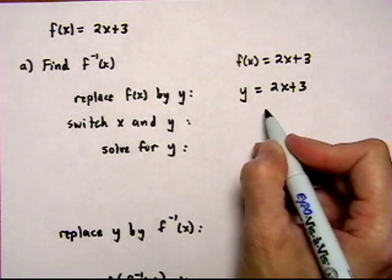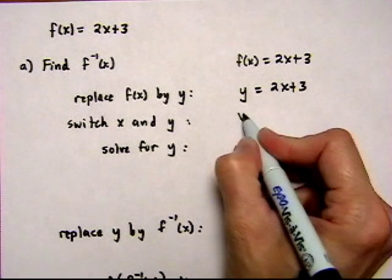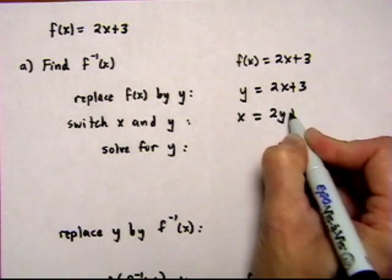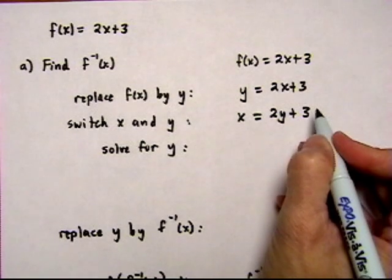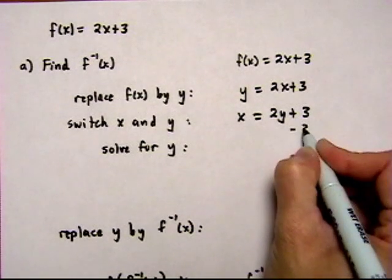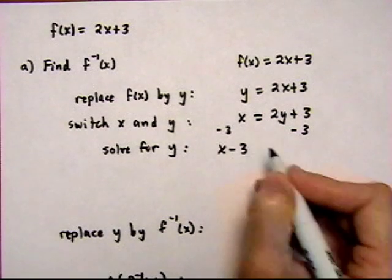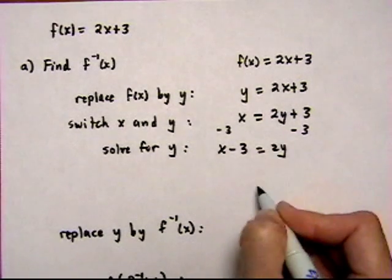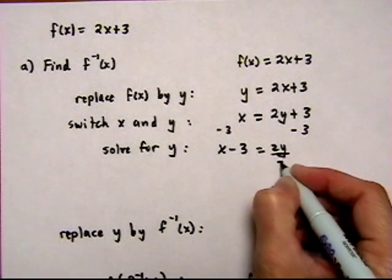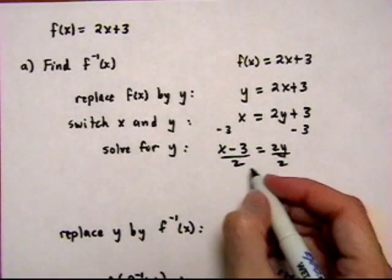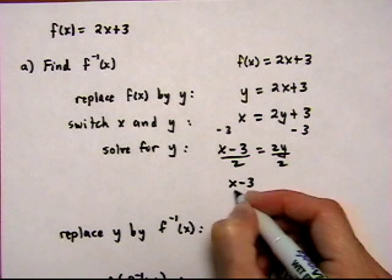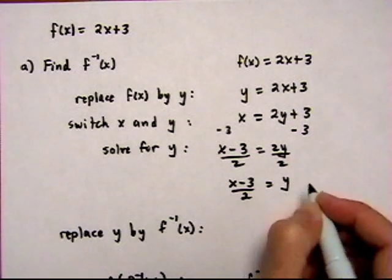And then switch the x and the y. So x is equal to 2y plus 3. Solve for y. Let's subtract 3 from both sides. And that gives us x minus 3 is equal to 2y. And then dividing by 2 both sides, we get x minus 3 over 2 equals y.